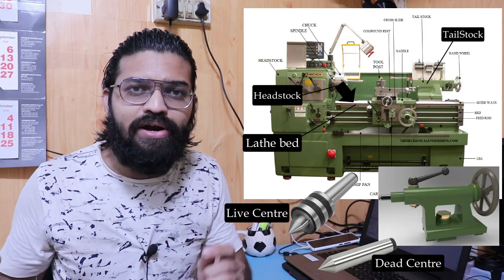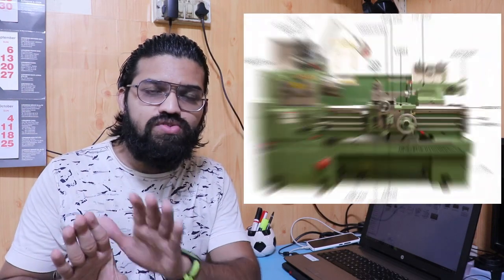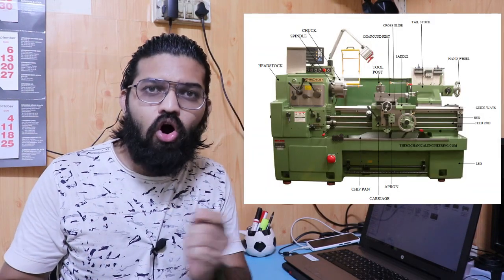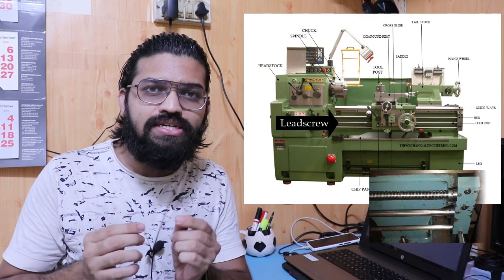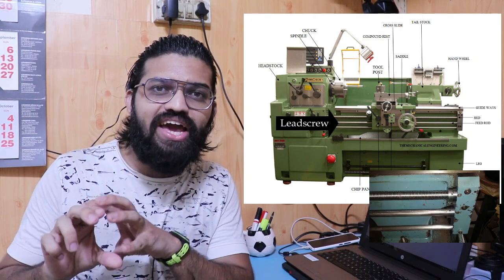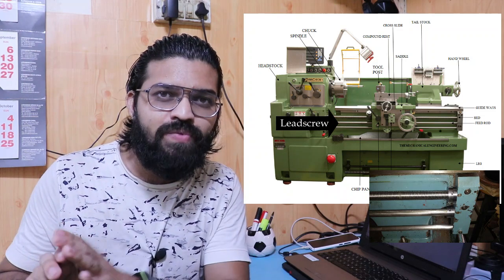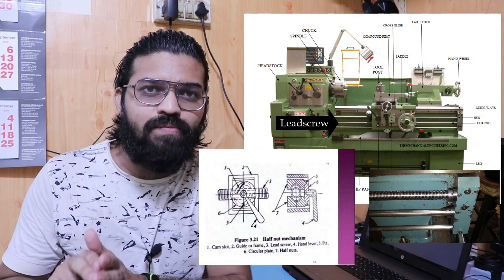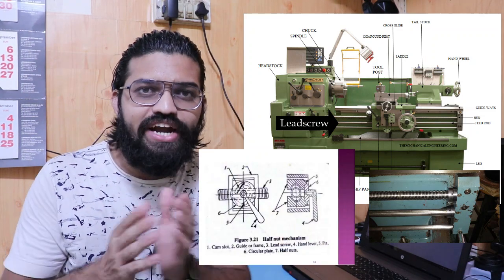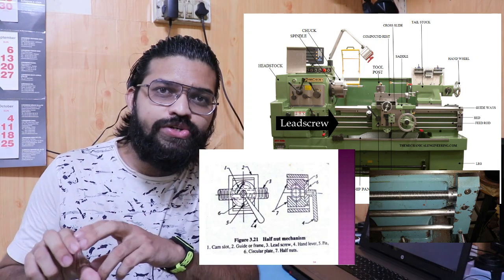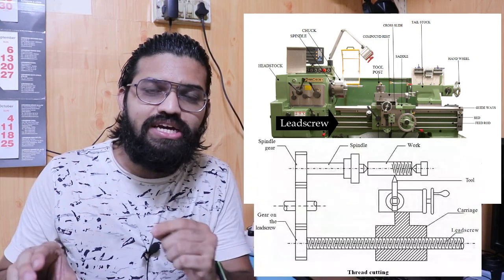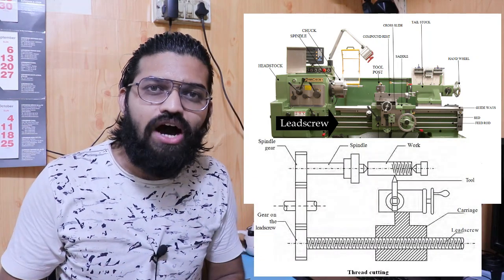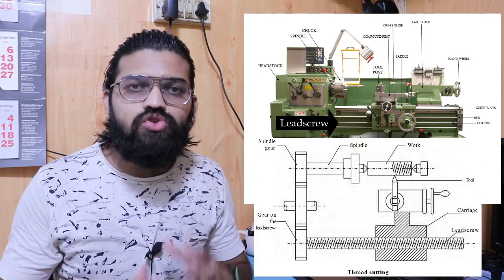When the carriage unit moves, you can see a small lead screw. This lead screw is used to engage and disengage the half-nut mechanism. While carrying out threading operations, if we engage the half-nut mechanism with the lead screw, we can carry out the threading operation.